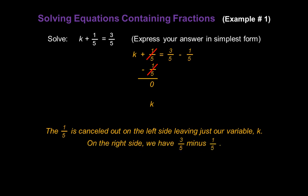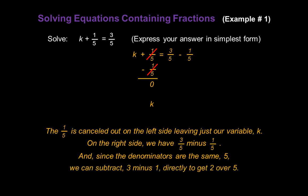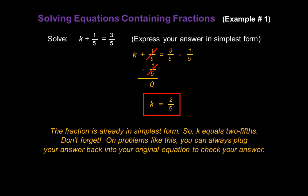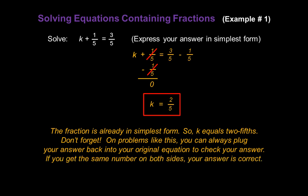On the right side we have three-fifths minus one-fifth. Since the denominators are the same — both are fives — we can subtract the numerators: three minus one, which gives us two in the numerator over five. The fraction two-fifths is already in simplest form, so k equals two-fifths is our answer. Don't forget: on problems like this you can always plug your answer back into the original equation. If you get the same number on both sides, your answer is correct.